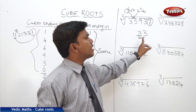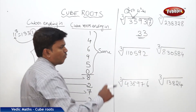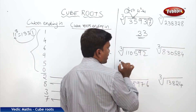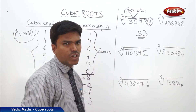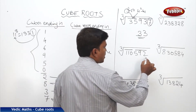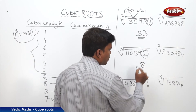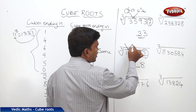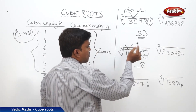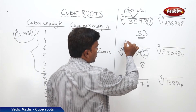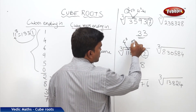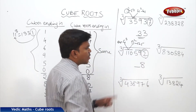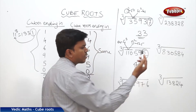So the cube root of 35937 is 33. Now one more example. Make the partition into 3-digit groups. The first step: the cube number ends in 2, so the cube root should end in 8. The second step: the second partition number is 110. 110 comes between 4 cubed (64) and 5 cubed (125). We always take the lesser number, which is 4. So the answer is 48.